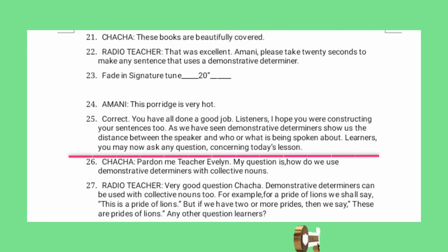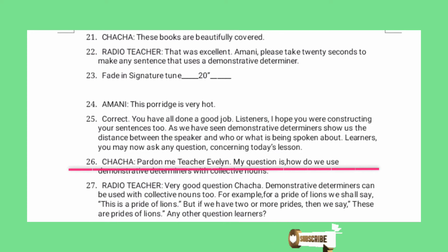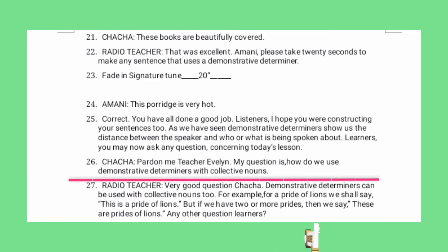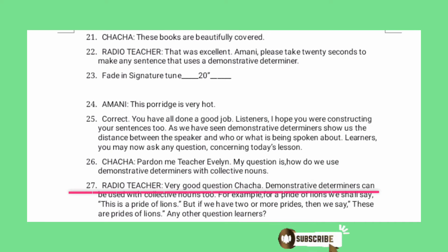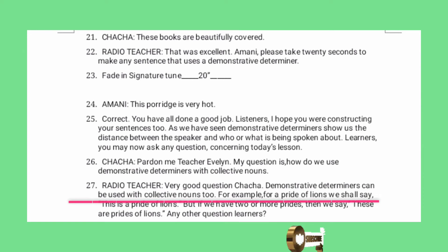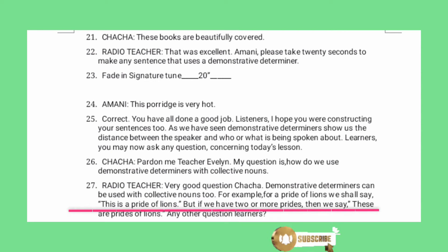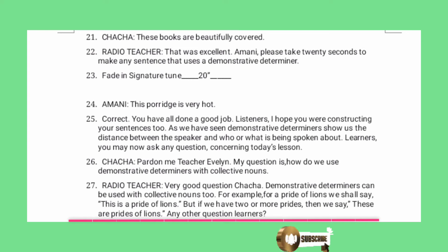Learners, you may now ask any question concerning today's lesson. Pardon me, Teacher Evelyn. My question is: how do we use demonstrative determiners with collective nouns? Very good question, Chacha. Demonstrative determiners can be used with collective nouns too. For example, for a pride of lions, we shall say: this is a pride of lions. But if we have two or more prides, then we say: these are prides of lions.